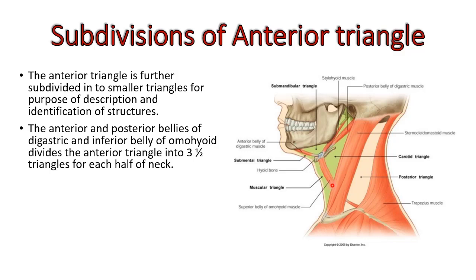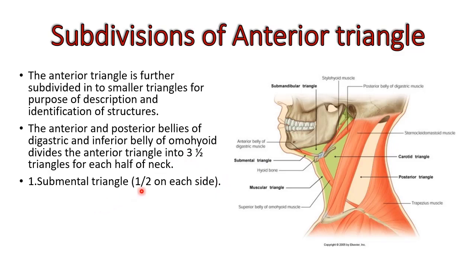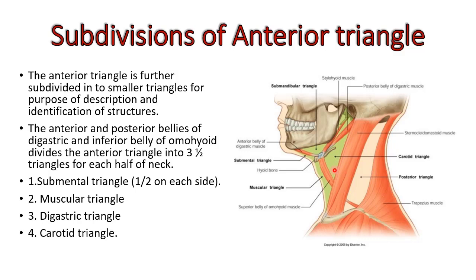The digastric muscle and the superior belly of omohyoid divide the large anterior triangle into three and a half triangles. The three and a half triangles are: first, the submental triangle; then the muscular, digastric, and carotid triangles. Below the hyoid bone you have the muscular triangle, then the digastric triangle, and then the very important carotid triangle.